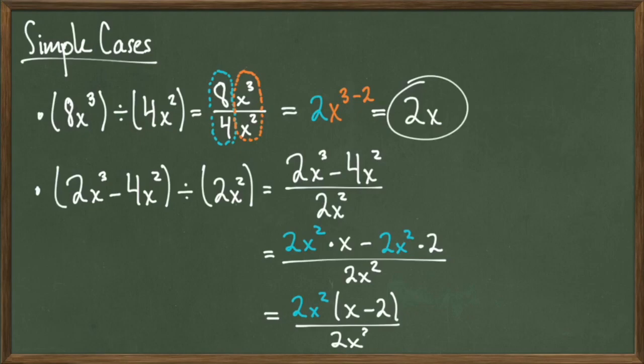Therefore, the numerator looks like 2x squared times the quantity x minus 2 over the denominator of 2x squared. Since 2x squared is a factor of both the numerator and denominator, they cancel. This leaves us with the final answer of x minus 2.